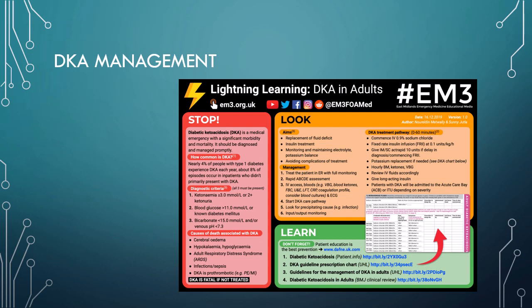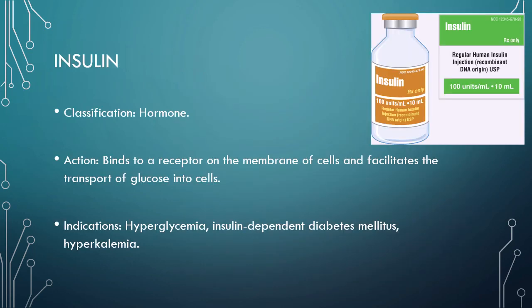Let's look at insulin. Insulin is a hormone — a chemical that causes the body to do something, a catalyst-type agent. A hormone comes around and causes something else to happen. Insulin gets into the body, causes the cells to open up, and now glucose goes in. Indications include hyperglycemia — we want to bring the blood sugar down — insulin-dependent diabetes mellitus, or type 1 diabetes, or hyperkalemia.